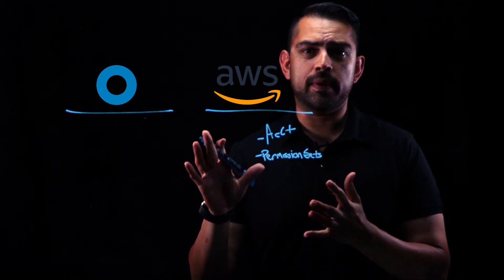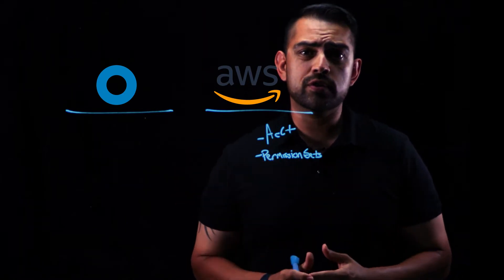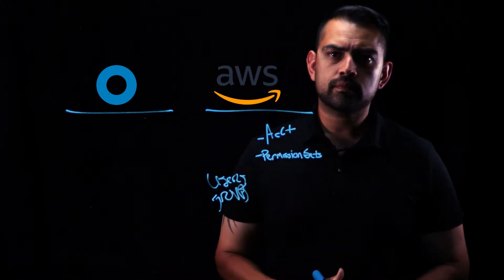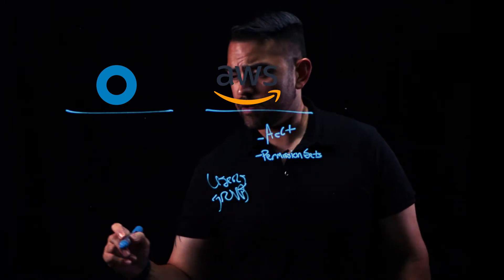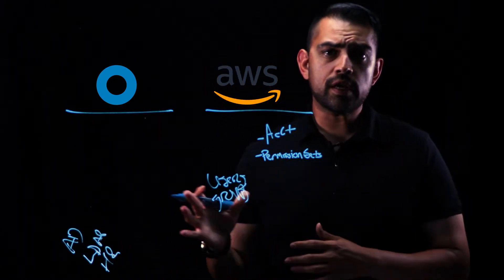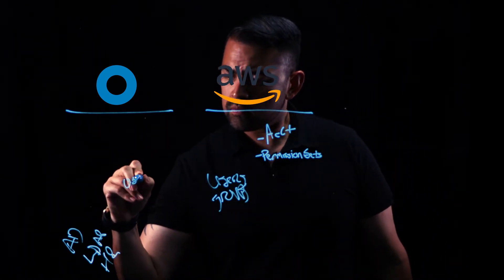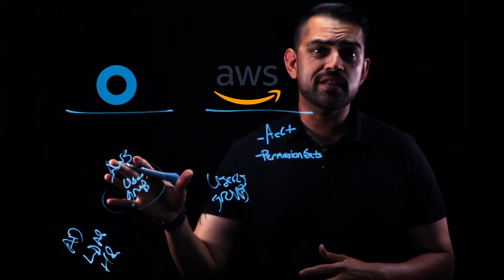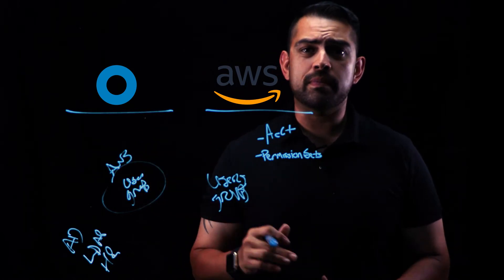Let's start with the AWS SSO app. Here you have all the user accounts and permission sets already created. From here, you'll assign users and groups as needed. On the Okta side, users come in from a multitude of sources such as Active Directory, LDAP, or HR. These users are then added to groups and assigned the new AWS SSO app. Users assigned to this new app will automatically be created in AWS, and groups assigned here will automatically have their members synced.